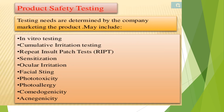Product safety testing needs to determine the quality of the product the company intends to market. Various evaluation parameters are performed for each formulation, whether cosmetic or pharmaceutical — tablet, capsule — each formulation requires evaluation to determine quality and purity. For sunscreen creams and other cosmetic preparations, the evaluation parameters include: in vitro testing, cumulative irritation testing, RIPT (Repeat Insult Patch Test), sensitization, ocular irritation, facial sting, phototoxicity, photoallergy, comedogenicity, and acnegenicity.